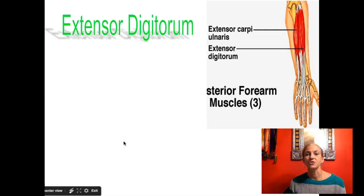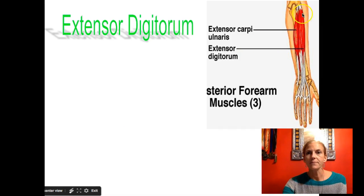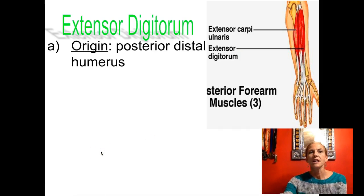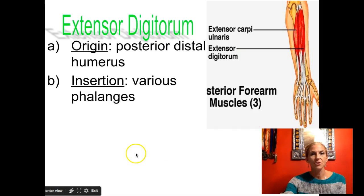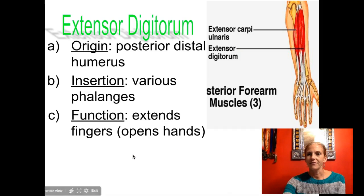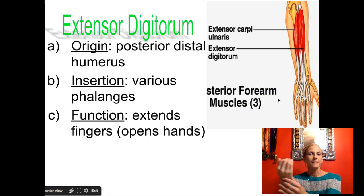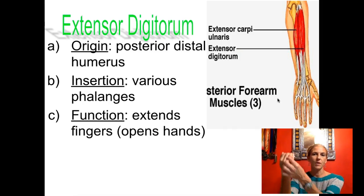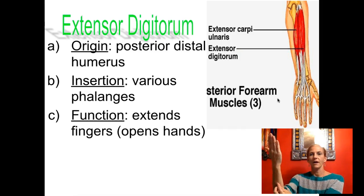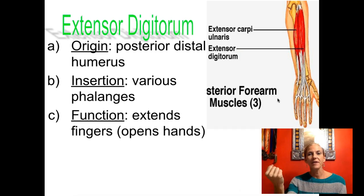On the back of the arm, you have extensor digitorums and extensor carpi — the same principle applies. You can see the extensor carpi ulnaris here, and notice the tendon stops at the carpi. The digitorum tendons go all the way into the back of the fingers, the phalanges. We're starting in the humerus for either one, then ending in the phalanges for the digitorums and in the carpi for the extensor carpi. In this case, when we have those tendons in the fingers and pull toward the arm, it causes the hand to open. So the muscles that control clenching or opening of the fist are on the front and back of the forearm.